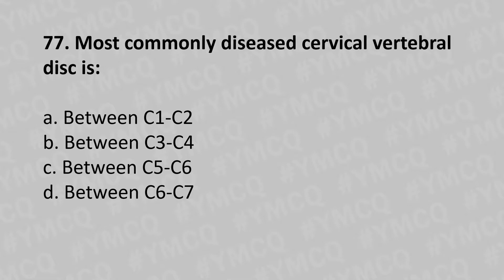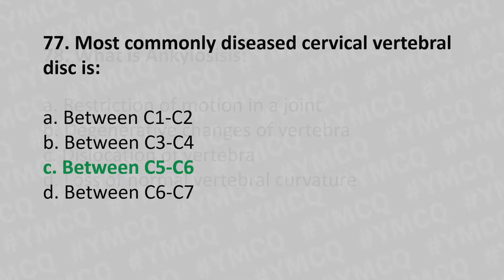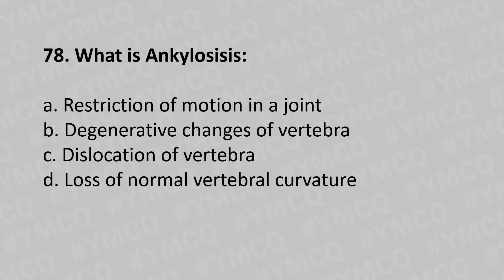option B between C3-C4, option C between C5-C6, option D between C6-C7. The answer is option C, between C5-C6. Moving to our 78th question: what is ankylosis? Option A restriction of motion in a joint,